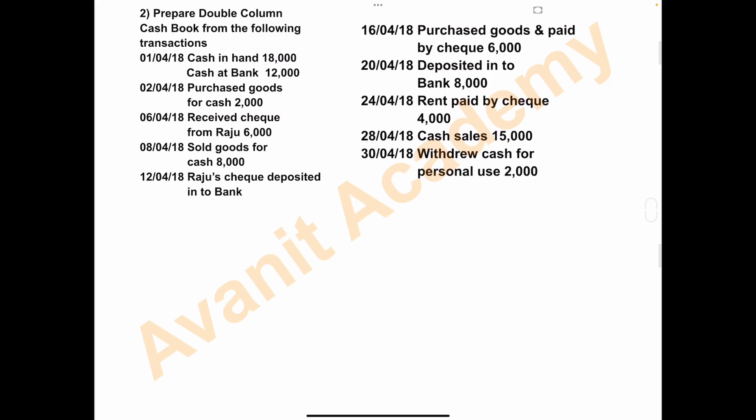Welcome to this class where we will solve a problem on the double column cash book. We need to prepare a double column cash book from the given transactions. In a double column cash book, there are two amount columns: one to record cash transactions of the business and one to record bank transactions of the business.